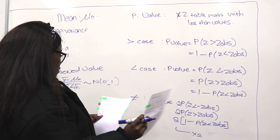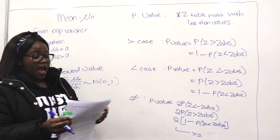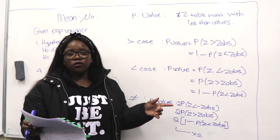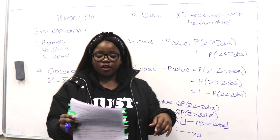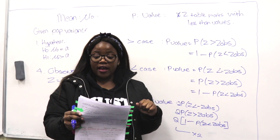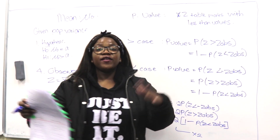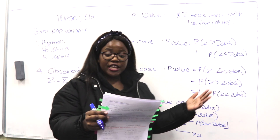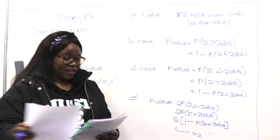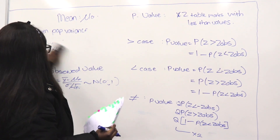For your conclusion, to reject H-naught we need two conditions: for the greater-than case, z observed is greater than z-alpha AND the p-value is less than alpha. We then reject H-naught at whatever level of significance and say there is sufficient evidence to conclude something, according to the question given.